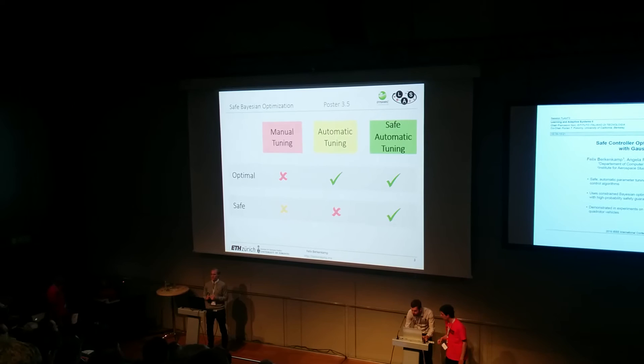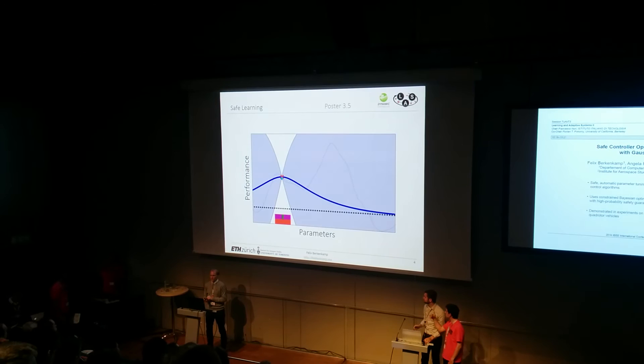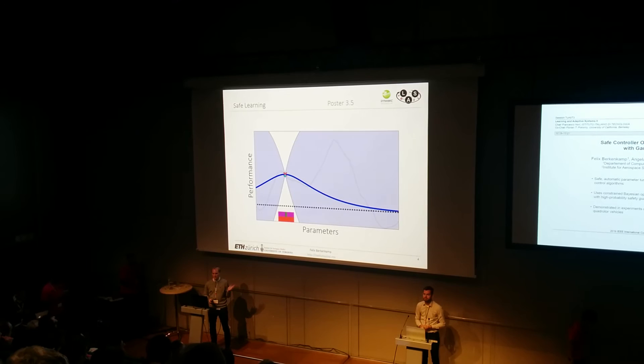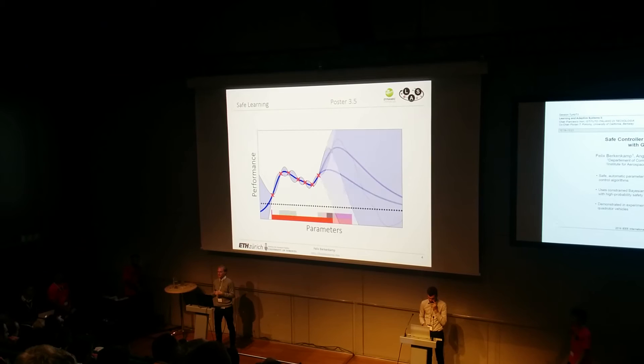The core idea behind the algorithm is to model the performance function as a Gaussian process. Given a point evaluation, shown here in red, of the parameters, we can know that parameters satisfy the black-dash performance constraint with high probability if they belong to this red set. Our algorithm then intelligently selects new parameters within the safe set that can either expand our knowledge about the safe set or tell us something about the best parameters.